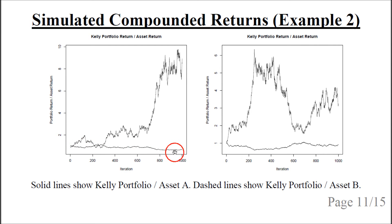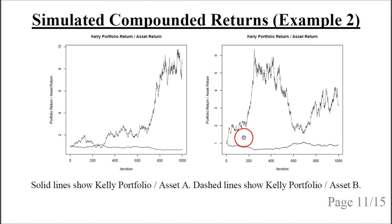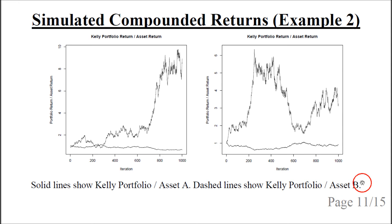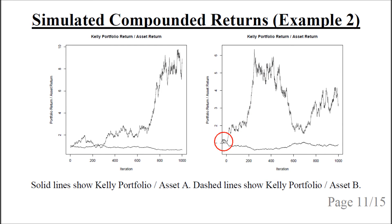Now consider simulations of the Kelly portfolio versus investments in either asset A or asset B. The solid line shows the cumulative return on the Kelly portfolio divided by the cumulative return on asset A — approximately one in both simulations, meaning Kelly and asset A perform similarly. The dashed line shows the Kelly portfolio divided by asset B. In the first simulation there is a jagged but roughly exponential increase, meaning the Kelly portfolio becomes exponentially better than asset B. In the other simulation there is a rapid increase followed by a decrease and then an increase again.